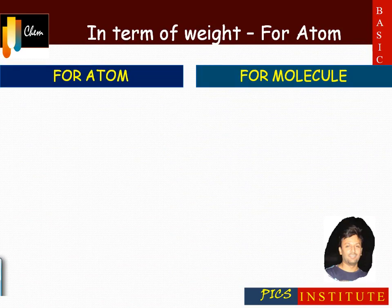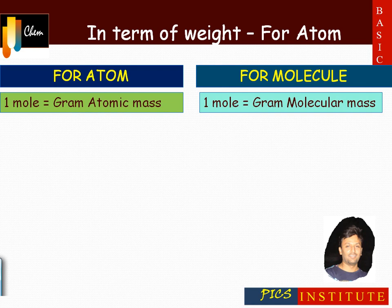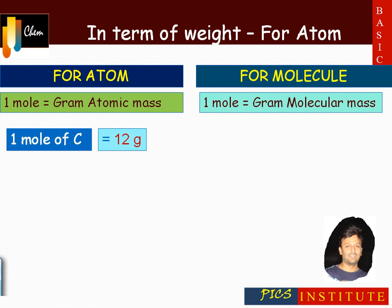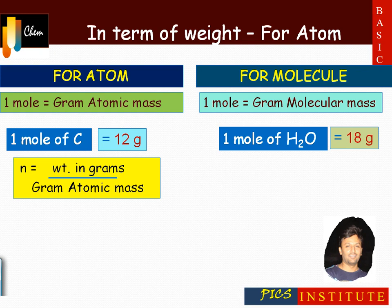In terms of weight, the mole can be defined for atoms as well as for molecules. For an atom, one mole is the amount of substance which weighs equal to its gram atomic mass. For a molecule, one mole is the amount of substance which weighs equal to its gram molecular mass. For example, one mole of carbon atom equals its gram atomic mass, that is 12 grams. For one mole of H₂O, the amount equals its gram molecular mass, that is 18 grams.